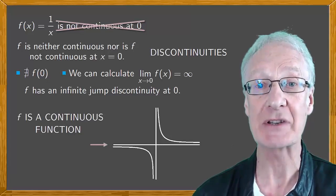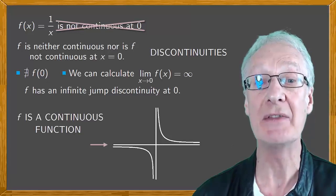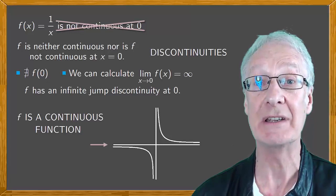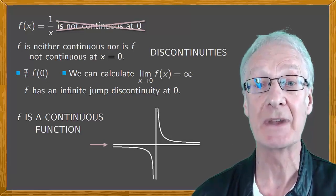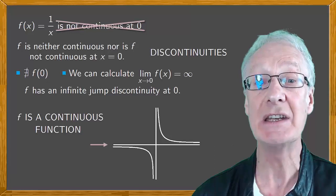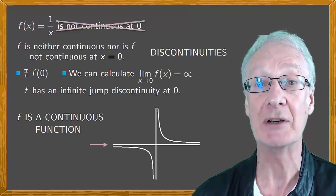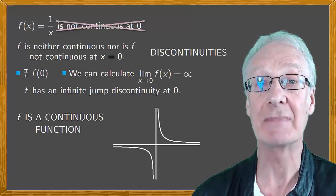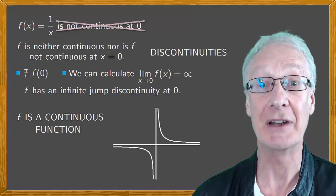But f is continuous, and that's because it's continuous at any point in the domain. x equals zero isn't a point in the domain, and so continuity isn't studied there. So f is continuous function, and we lift the pencil from the paper. I know this may run counter to what you thought was true, but there it is.